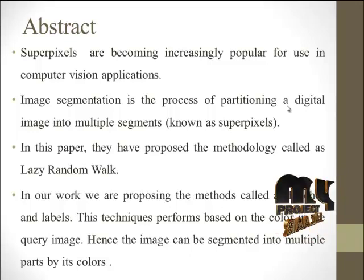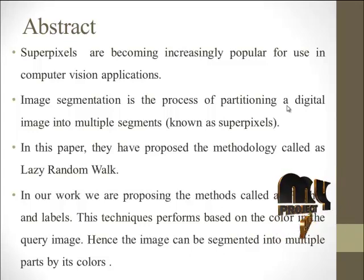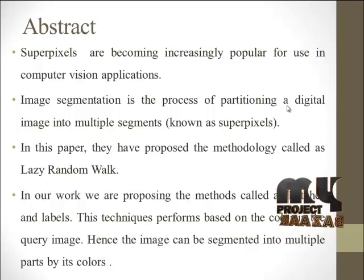Superpixels are commonly defined as grouping uniform pixels in the image, which have been widely used in many computer vision applications such as image segmentation and object recognition. The superpixel concept was originally presented by Renn and Mollick as defining a perceptually uniform region using normalized cuts. The main merit of superpixels is to provide a more neutral and perceptually meaningful representation of the input image. Compared to traditional pixel representation, the superpixel representation greatly reduces the number of image primitives and improves representative efficiency.